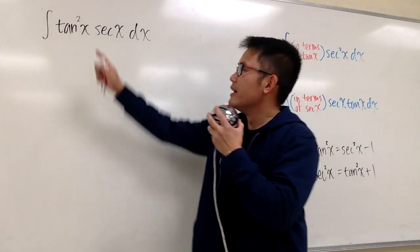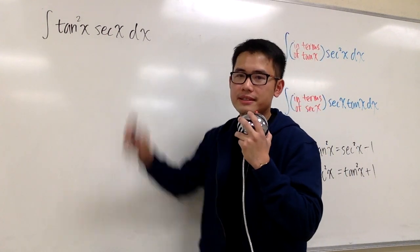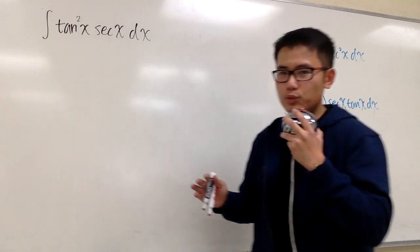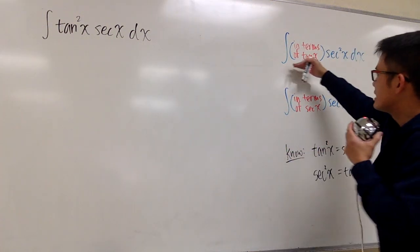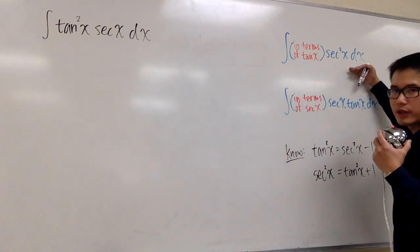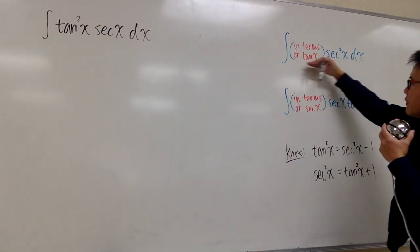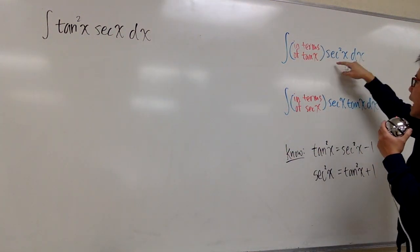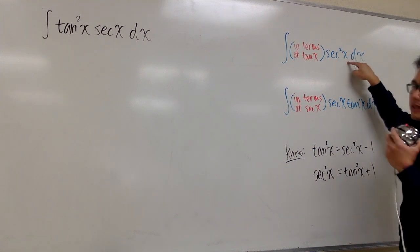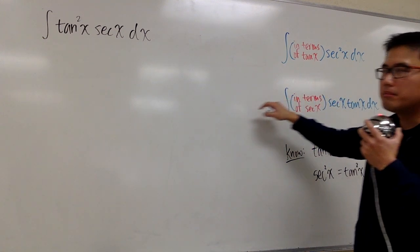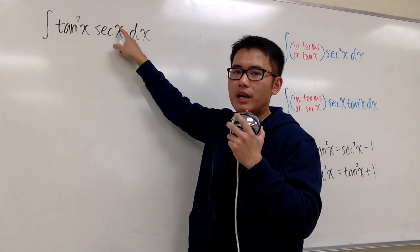Let's see how we can integrate tangent squared x times secant x. This one, unfortunately, does not satisfy the first strategy, because in terms of the first strategy, I would like to have secant squared x on the side, but we only have secant to the first power x.